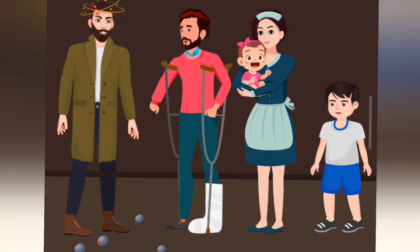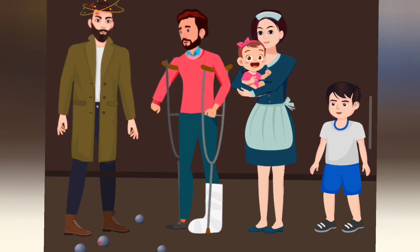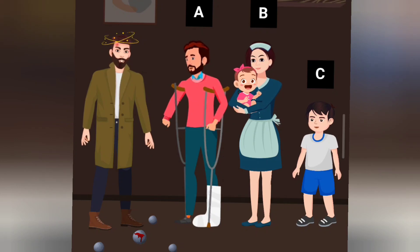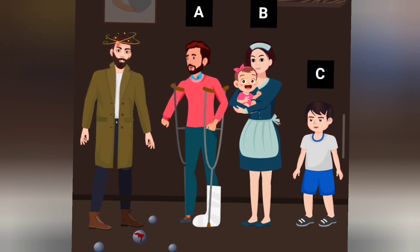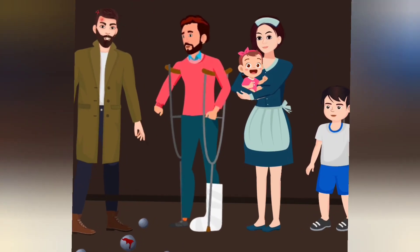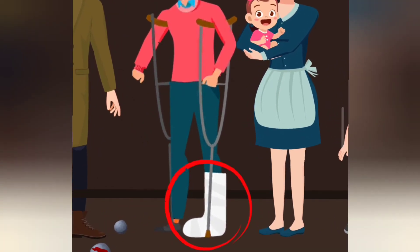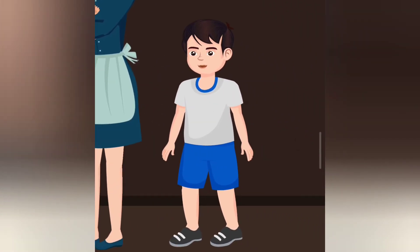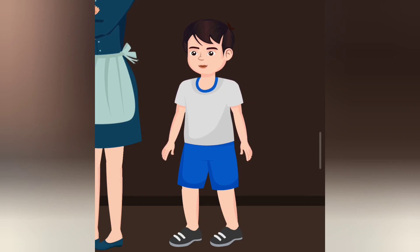One of these three suspects hit Jakob with a stone. Can you guess who did it? A, B, C. A is injured so he cannot hit him. B is carrying a child, so she also can't hit him. Therefore, C is the culprit.